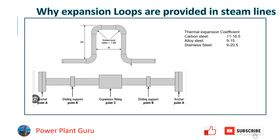Today we have come up with an important topic — also a very commonly asked topic in interviews — why steamlines are provided with bends or loops, i.e., expansion loops. These expansion loops are provided basically to cater to the requirement of thermal expansion while the pipe is hot.